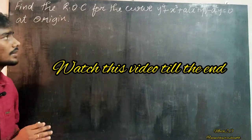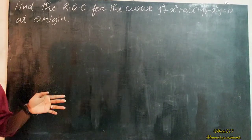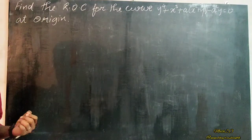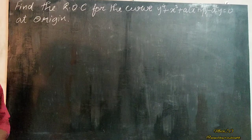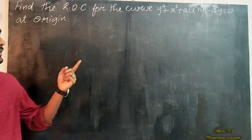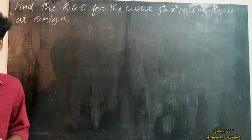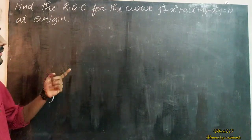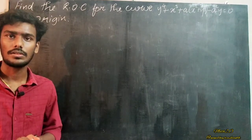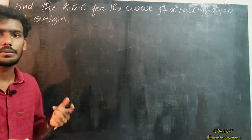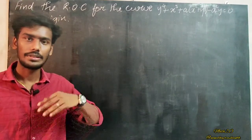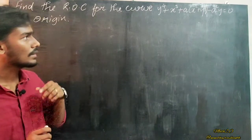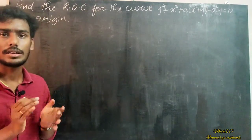Find the radius of curvature for the curve: y to the power 4, plus x cubed, plus a times x squared, plus y squared, minus a squared times y, is equal to 0, at the origin. This curve is a Cartesian equation, but in Cartesian equation this is the implicit formula — it is not in explicit form. We have to find the radius of curvature in this implicit form of Cartesian equation.